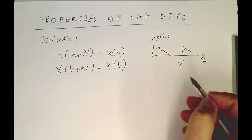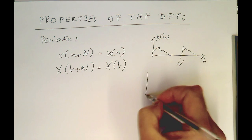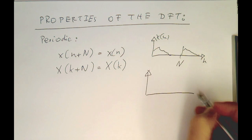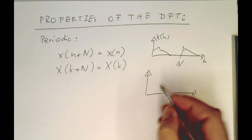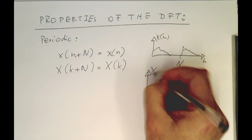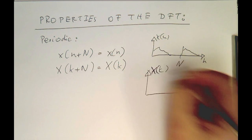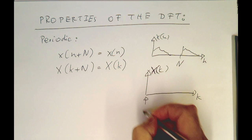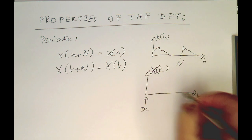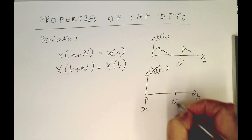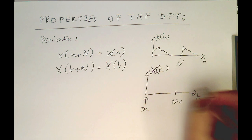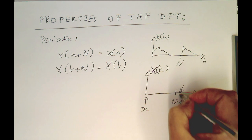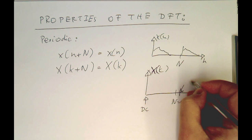Also there, we have periodicity. And the simplest way of seeing this is, remember, if this is k's or frequency index, this is x of k. So if this is here, the DC, and this runs up to n minus 1, then the DC would be here at n again.